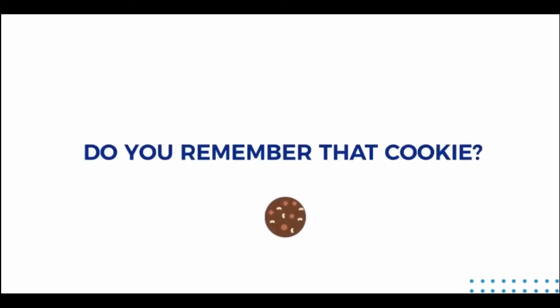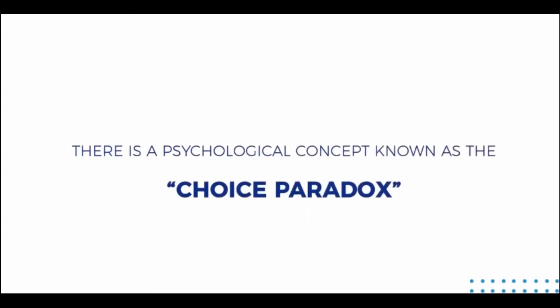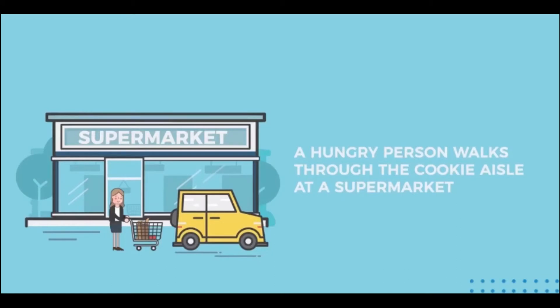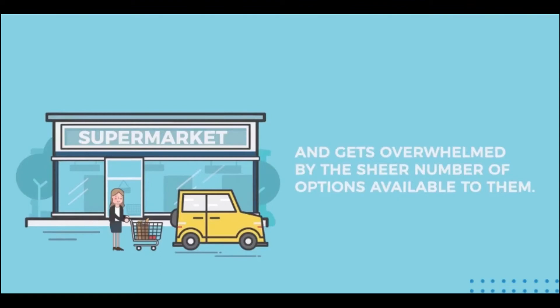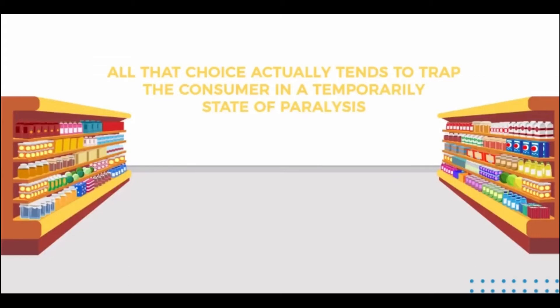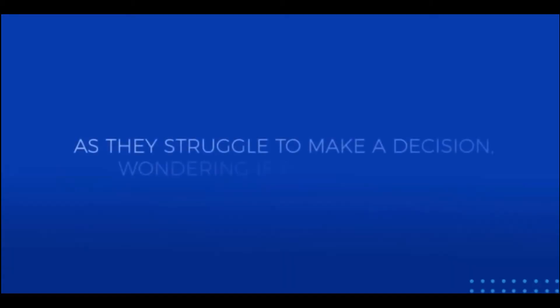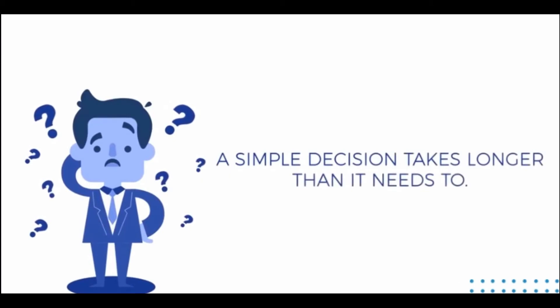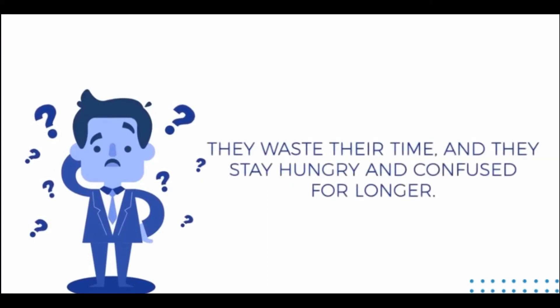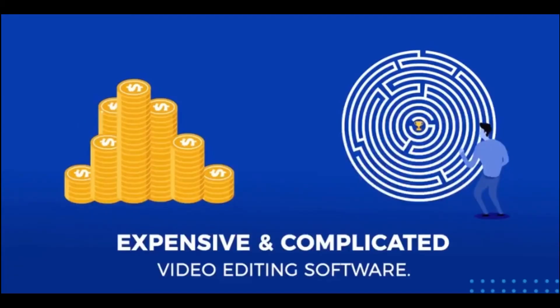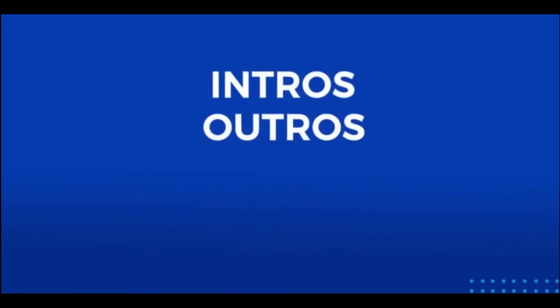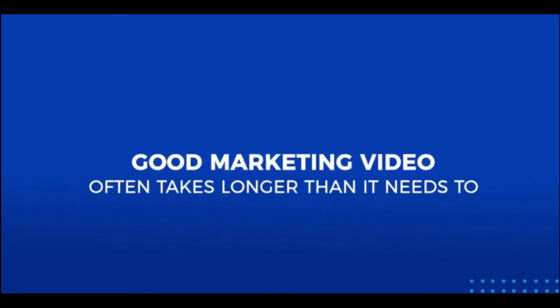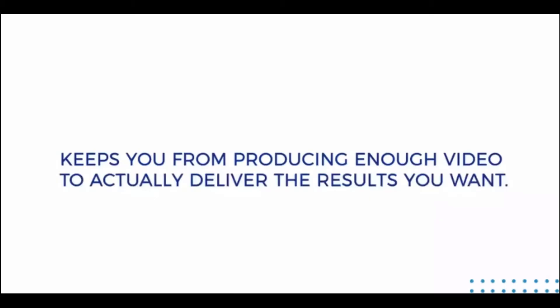Now, do you remember that cookie? There is a psychological concept known as the choice paradox, demonstrated with the following example. A hungry person walks through the cookie aisle at a supermarket and gets overwhelmed by the sheer number of options available to them. All that choice actually tends to trap the consumer in a temporary state of paralysis as they struggle to make a decision, wondering if they're making the best choice. A simple decision takes way longer than it needs to — they waste their time and stay hungry and confused for longer.